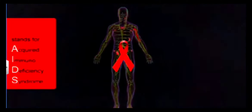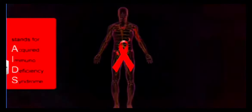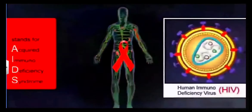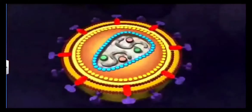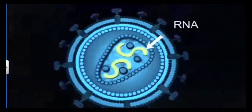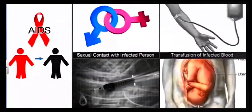In this disease, the immunity of the body becomes very weak. This is due to a viral infection. The name of the virus is HIV, Human Immunodeficiency Virus. Please learn the structure of this virus. It is a retrovirus having RNA as genetic material.